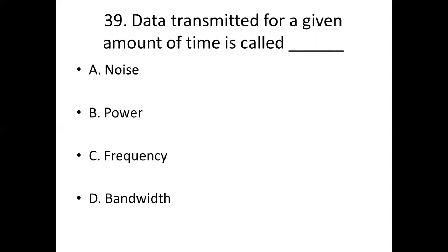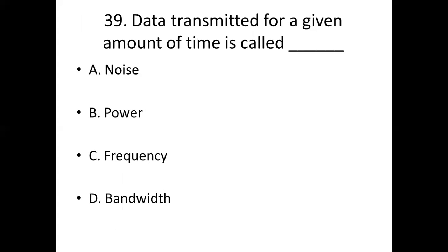Thirty-ninth bit. Data transmitted for a given amount of time is called dash. Option A: noise. Option B: power. Option C: frequency. Option D: bandwidth. Answer: Option D, bandwidth.